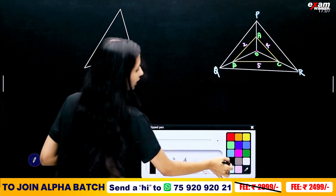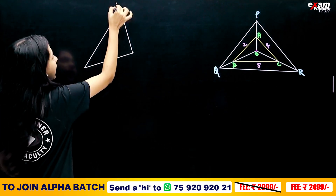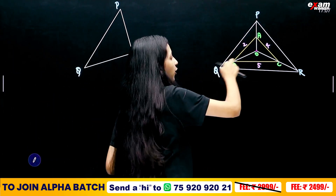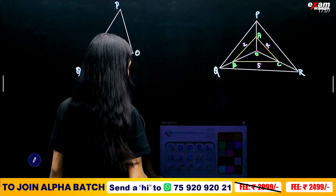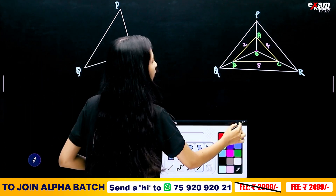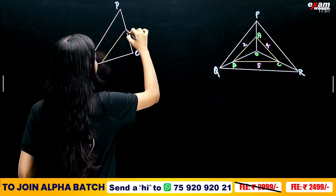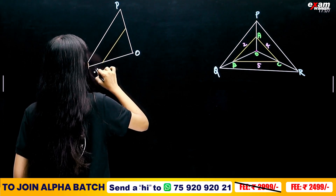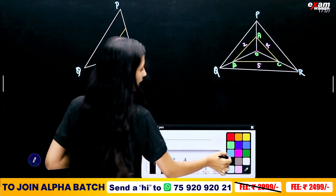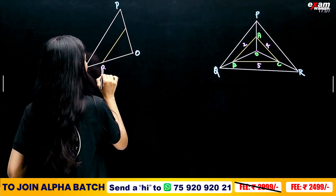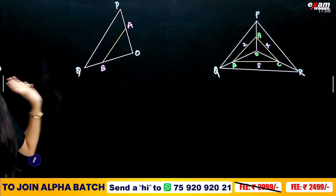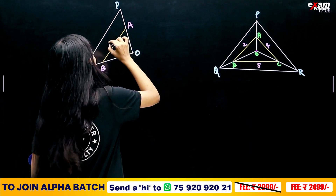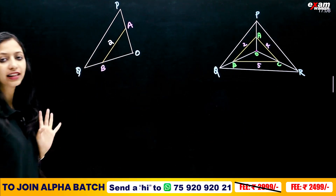This triangle is P, Q, O. Here we have a line AB. Here is B and here is A. This is a triangle, and we will look at this. This measurement is 2cm.